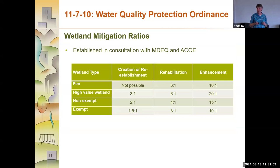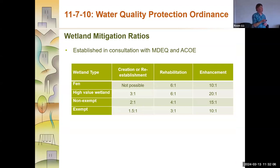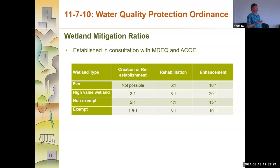I'm not a compensatory mitigation expert, but we did look at various wetland types — from fan to high-value wetlands to non-exempt and exempt wetlands — and whether we were being requested for creation or reestablishment, rehabilitation or enhancement. We developed various mitigation ratios, and those have been pretty well accepted and adhered to with the few applications that have requested either the filling or partial filling of wetlands within our community. We require bonding up to five years and a performance monitoring program to ensure overall functions and values are being met at the end of that five-year period.